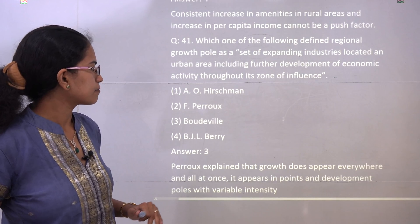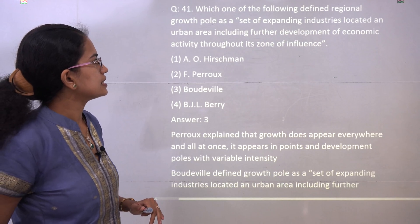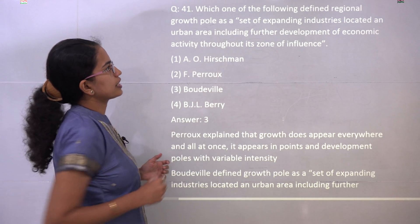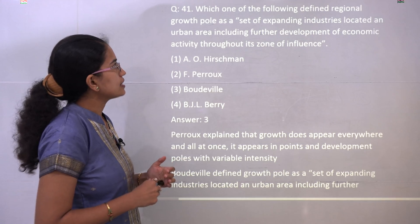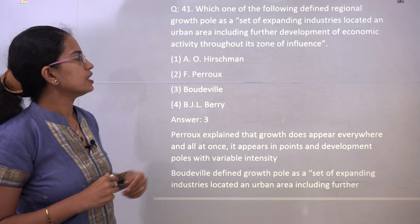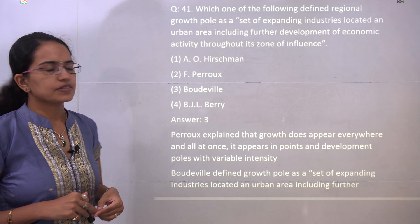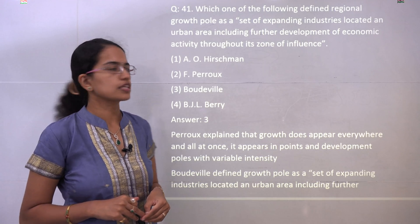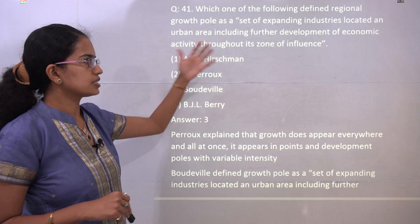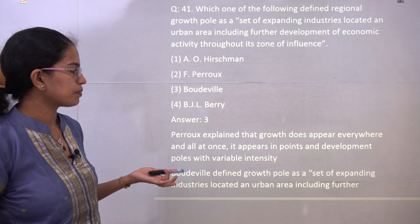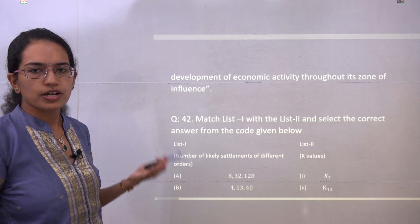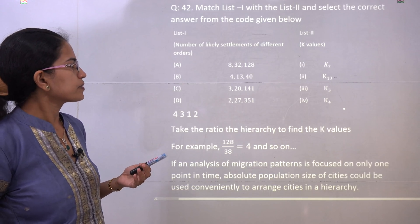The set of expanding industries located in an urban area, including the development of economic activity throughout the zone of influence, was defined by Bodeville. This is a direct definition propounded by Bodeville, which was a modification of Perroux's growth pole model.